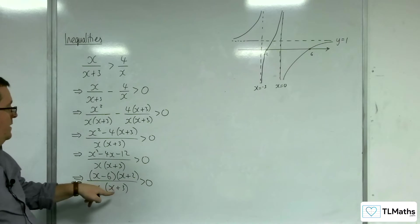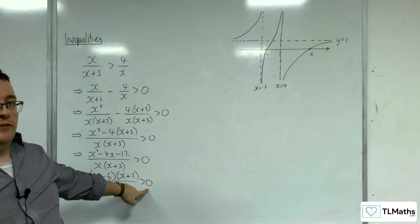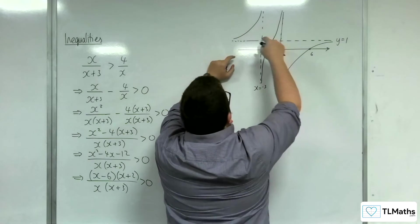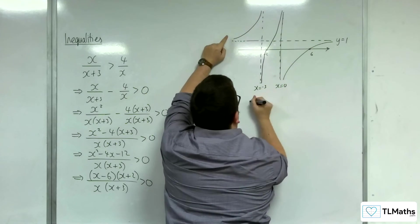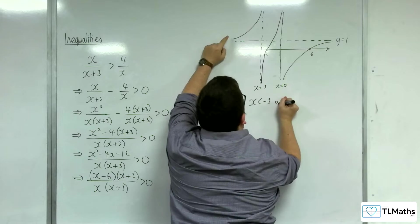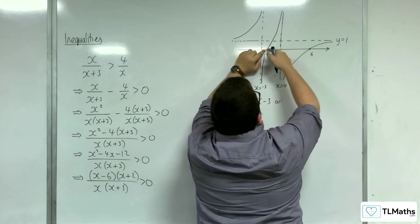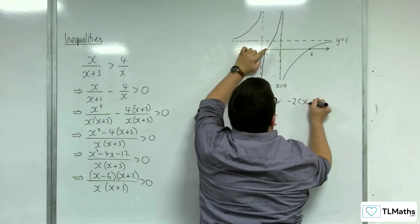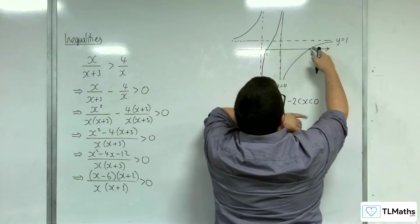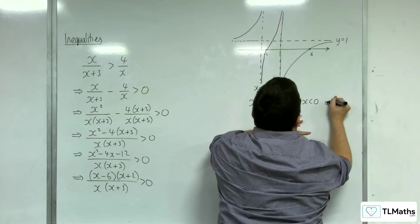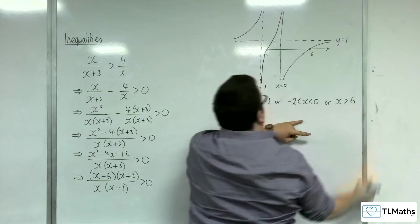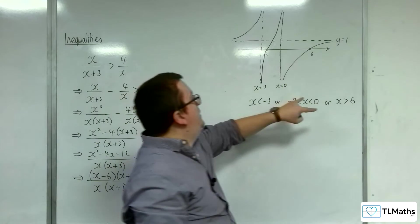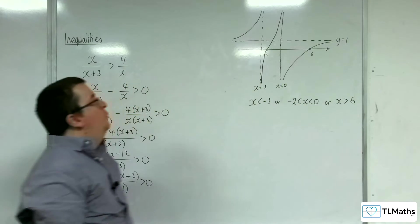Now I'm being asked, where is this above the x axis? So it is above it here when x is less than minus 3. It's above the x axis here between minus 2 and 0. And it's above the x axis here when x is greater than 6. Okay, so that's the other three separate distinct regions for which this is true.